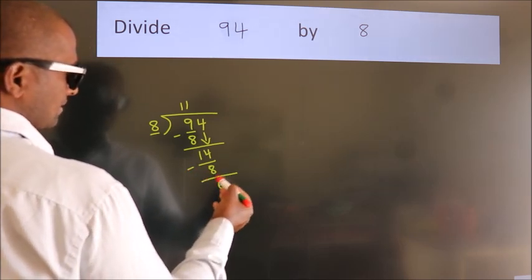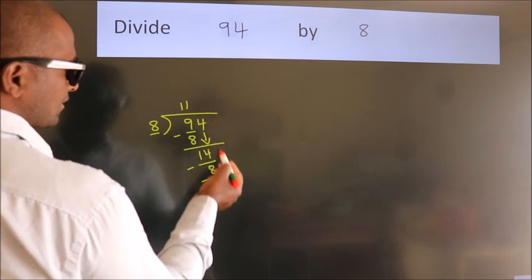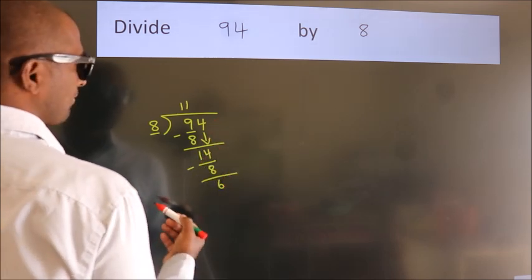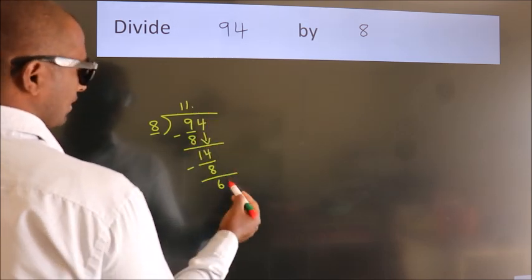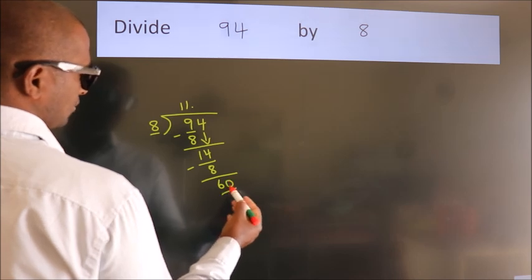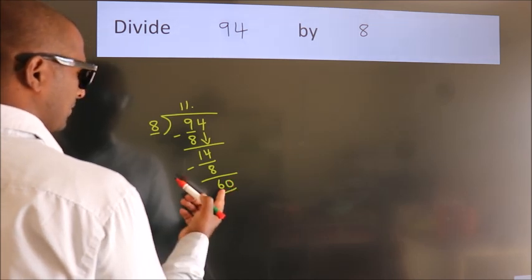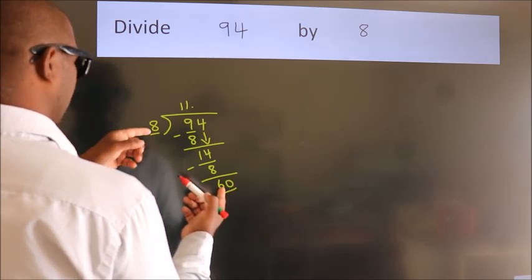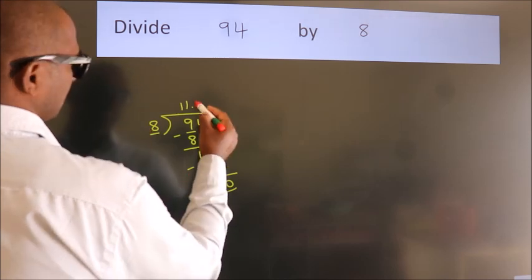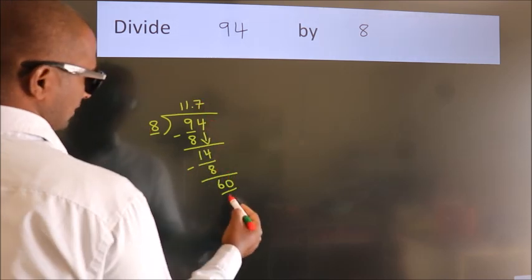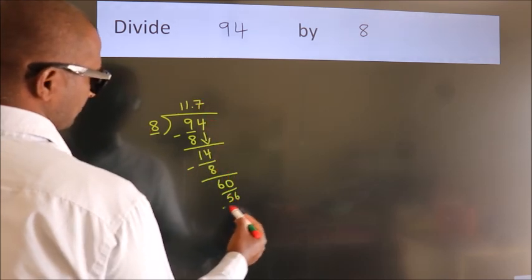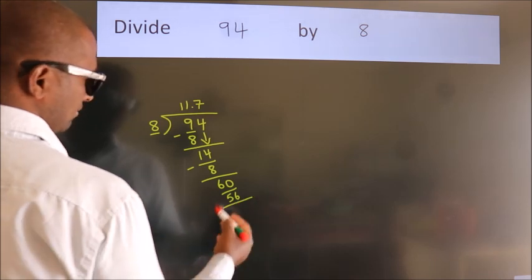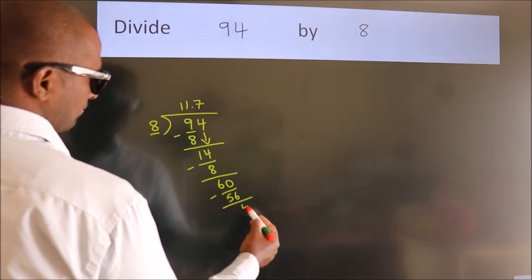After this, no more numbers to bring it down. So what we do is, we put dot, take 0. So, 60. A number close to 60 in 8 table is 8 sevenths, 56. Now we subtract, we get 4.